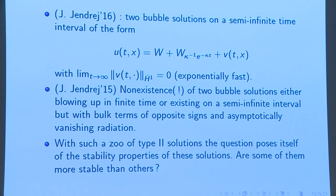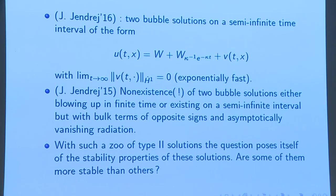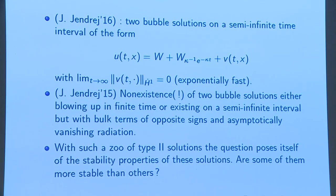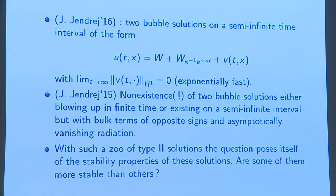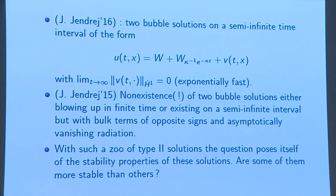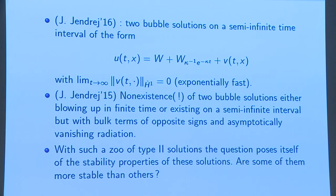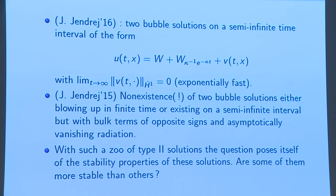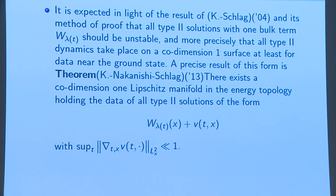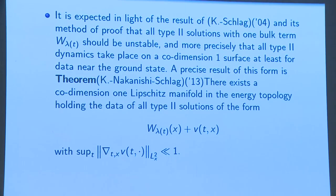So it's an incredible zoo of type 2 solutions, very complicated. And the natural question again is: which ones are the generic ones in terms of optimal genericity, and which ones will you probably never see?